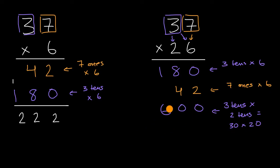Just to be clear, we've already thought about 37 sixes—that's these two numbers up here. We still have to add them, but now we're thinking about 37 twenties. First we thought about 30 twenties, which is 600.